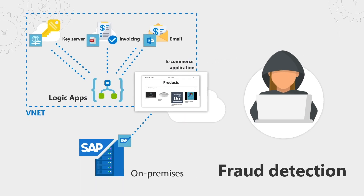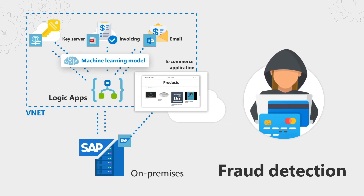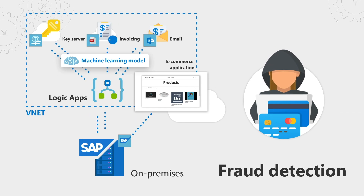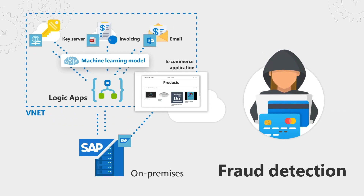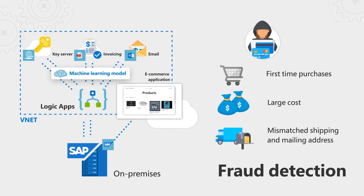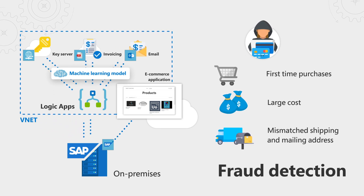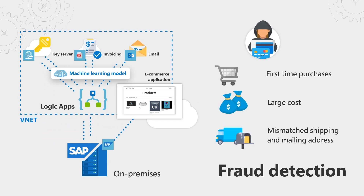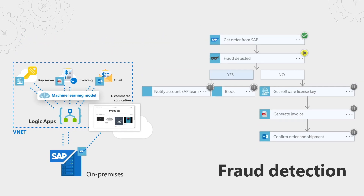In our case, we'll add some intelligence to it. We're going to add a custom machine learning model to check for possible fraudulent purchases and determine a course of action to take. The model looks for a few different things, such as if it's someone's first-time purchase with a really large purchase amount, or if the shipping and billing address do not match. In Logic App, we'll decide on either allowing the purchase to be fulfilled or putting it on hold and triggering a manual review.